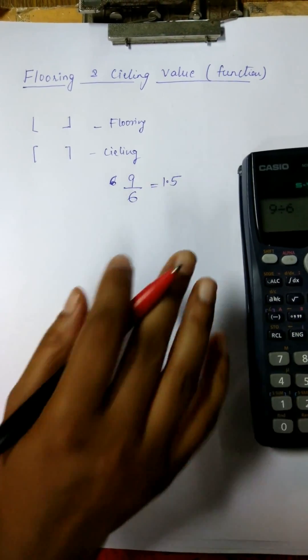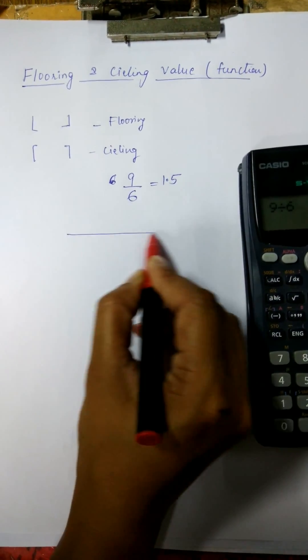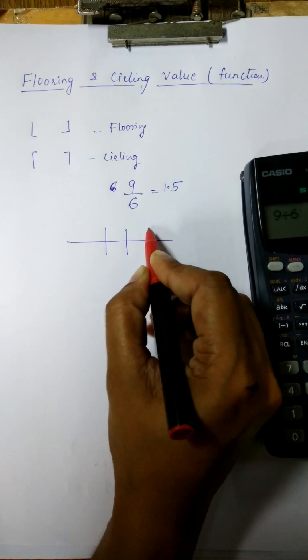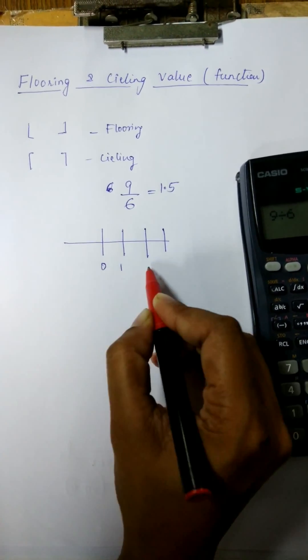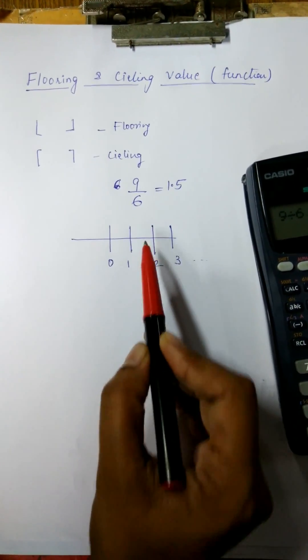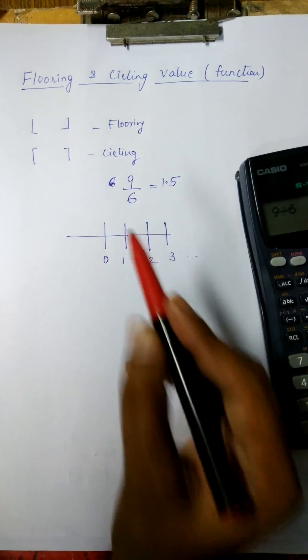Now, we have to remove flooring and ceiling values. If we map it, 0, 1, 2, 3 and so on. Where will 1.5 come from? It will come from 1 and 2. If we map it, it will come from here.